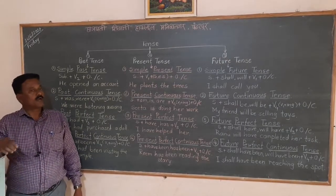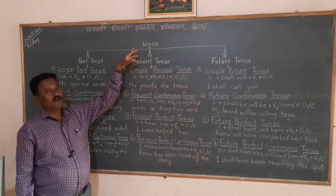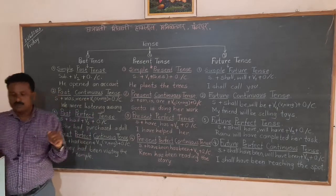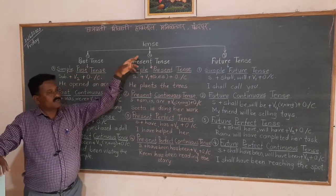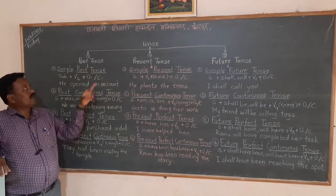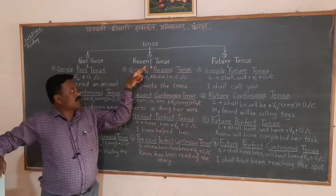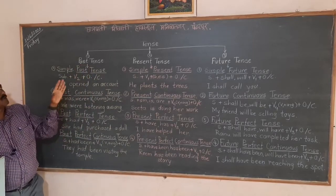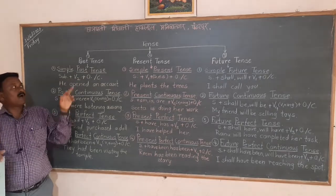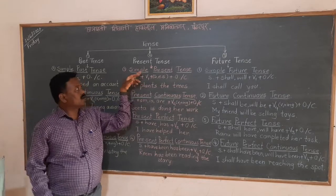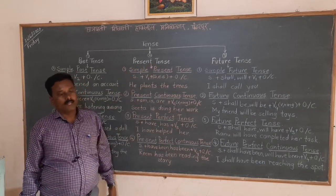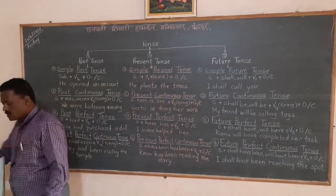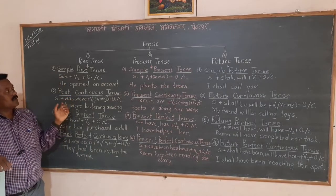Good morning students. Today we are going to turn towards the main grammar section of English subject and it is tense. Tense means the change of verbs, and there are three main types of tenses: first is past tense, second present tense, and third future tense. Past tense means things that have happened in the past; what is going on now is present tense; and what will happen after this moment is future tense.